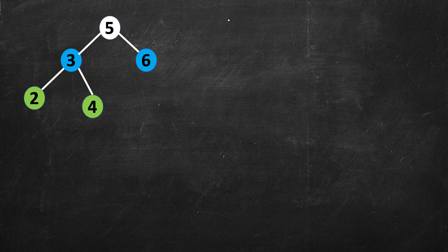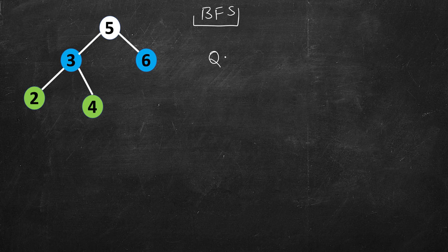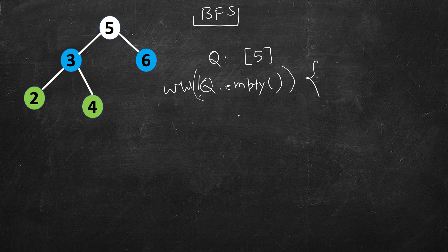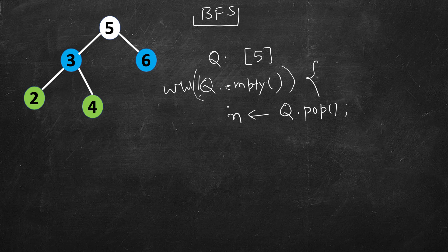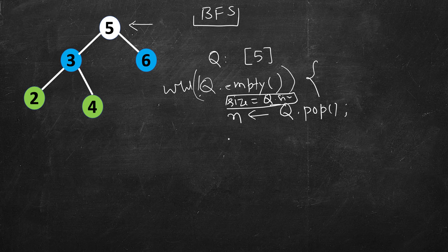We will follow a breadth-first search approach, which is generally used for level order traversals. You can use DFS also but BFS is much simpler. We will create a queue and insert root into it, so 5 is inserted. While the queue is not empty, we will pop it. Before popping, let's note the size of the queue — q dot size — so we know how many elements are at a given level. We run a loop for i equal to 0 to size minus 1.